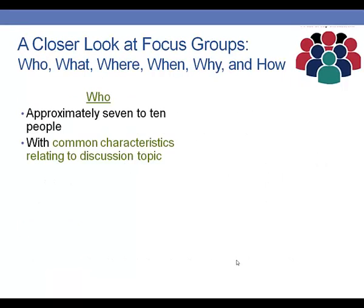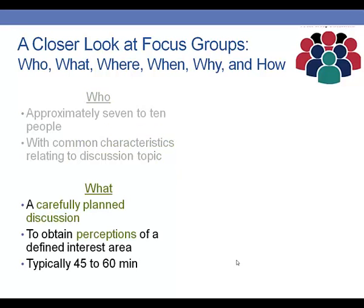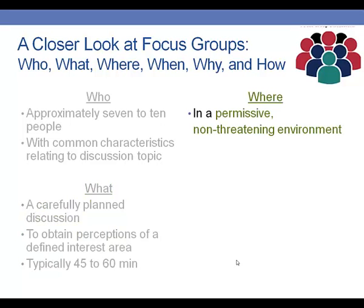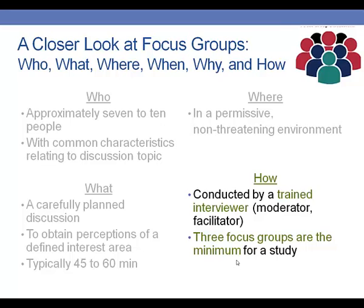Focus groups typically take place with six or seven to as many as 10 people with common characteristics relating to a discussion topic. These are carefully planned discussions — all of your questions should be predetermined, which doesn't mean you won't ask additional questions, but you need to go in with a clear plan. This will help us obtain perceptions in a defined amount of time, typically 45 to 60 minutes, in an environment that is comfortable and familiar to participants. A focus group is typically run by a trained interviewer or moderator, and we typically need at least three focus groups to draw conclusions for a program evaluation or study.